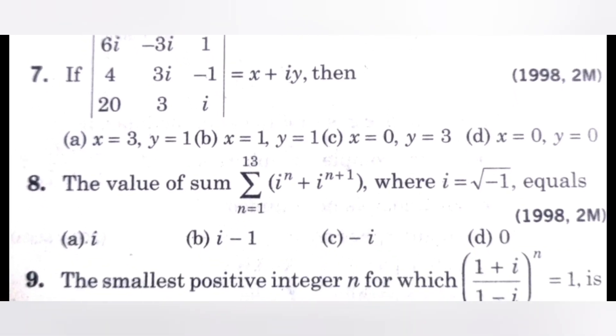Next question. The value of sum sigma N equals 1 to 13 of i power N plus i power N plus 1, where i equals square root of minus 1, equals. Find this value.